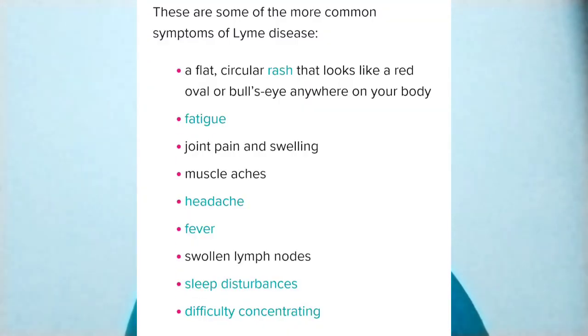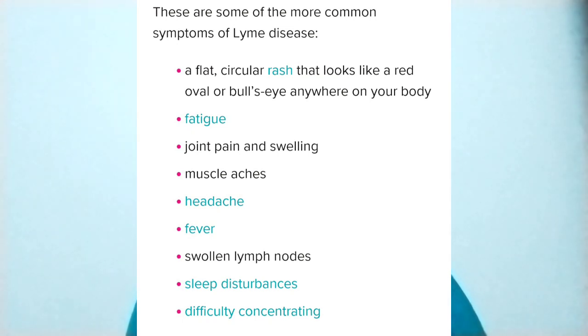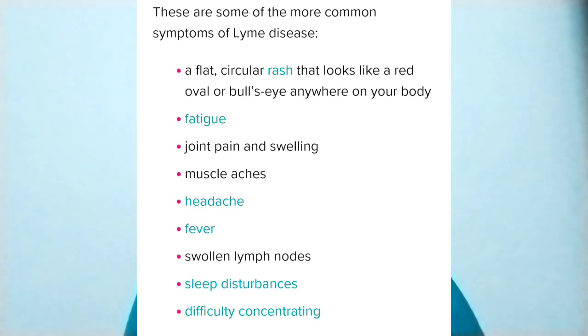What are the common symptoms of Lyme disease? First of all, the patient may feel flu-like symptoms such as body pain, muscle pain, fever, and chills. In addition to that, there is a circular rash that looks like a red oval or bullseye anywhere on your body. Then swelling, muscle pain, headache, swollen lymph nodes, sleep disturbances, and difficulty in concentration.